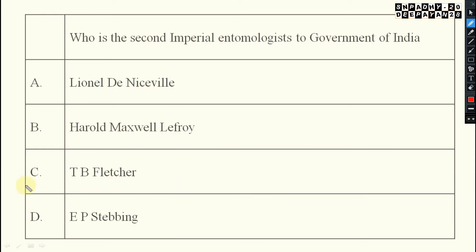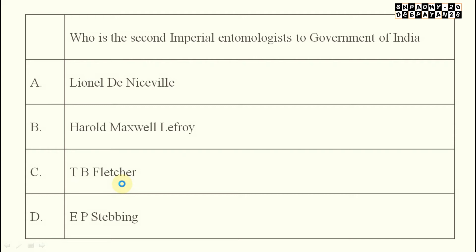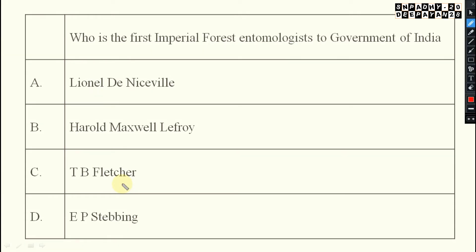Next: who is the second imperial entomologist to the Government of India? The answer is T.B. Fletcher. He is the second imperial entomologist to the Government of India — alternatively, he can be called the third entomologist to the Government of India. This is also very important. The year for this is not particularly important.